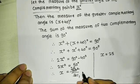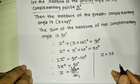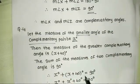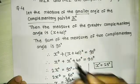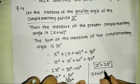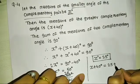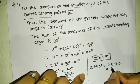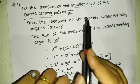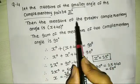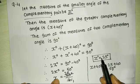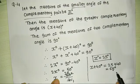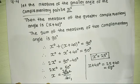X equals 25 degrees, which is the smaller angle. The greater angle is 25 plus 40 equals 65 degrees. So, the smaller angle is 25 degrees and the greater angle is 65 degrees. Verify: 25 plus 65 equals 90 degrees. Therefore, the required angles are 25 degrees and 65 degrees.